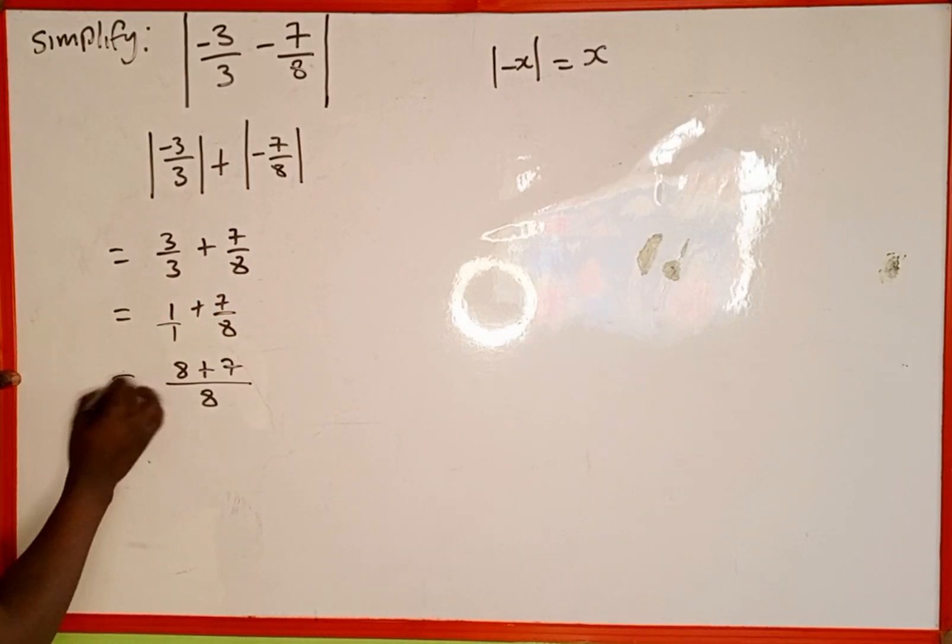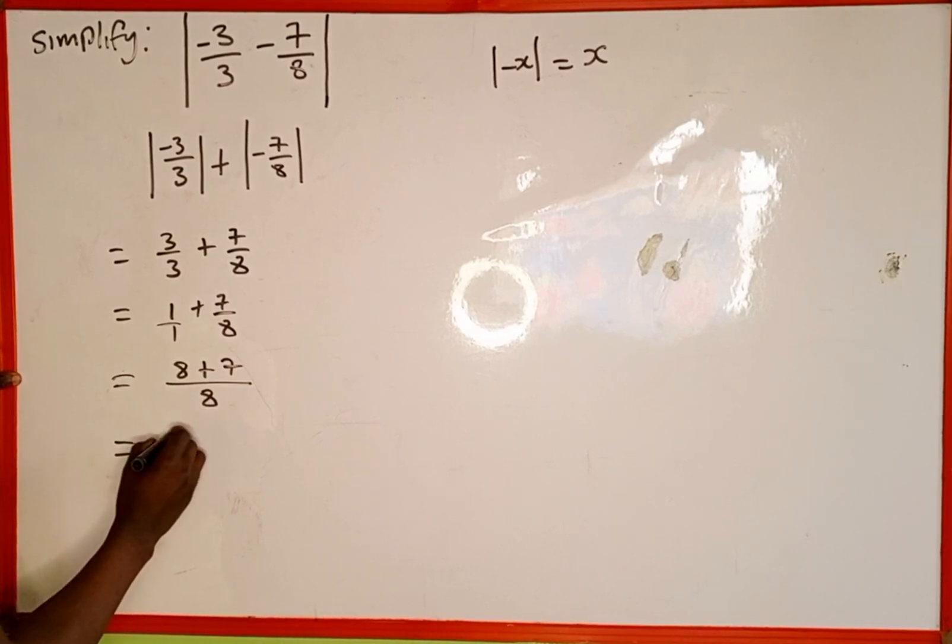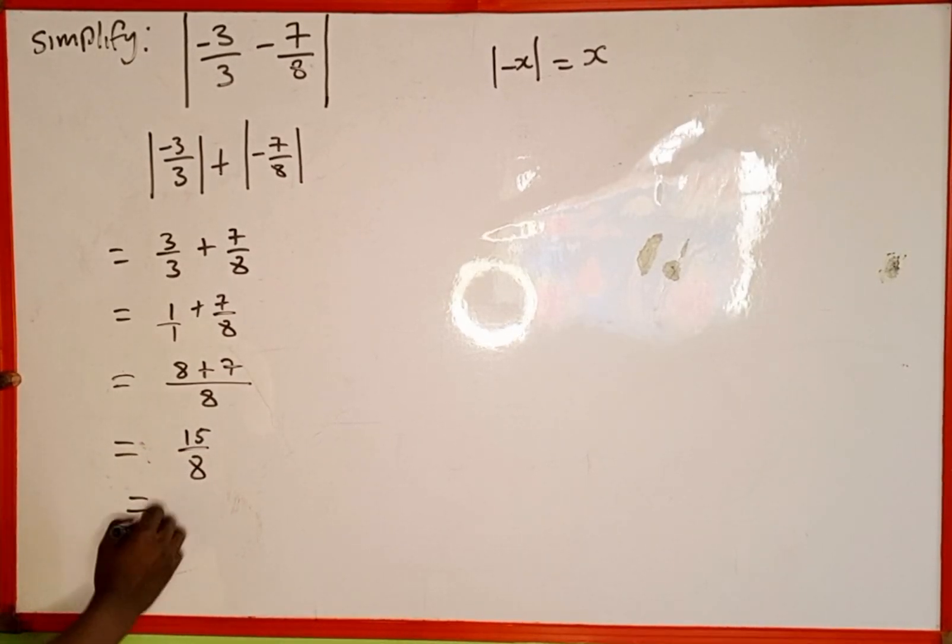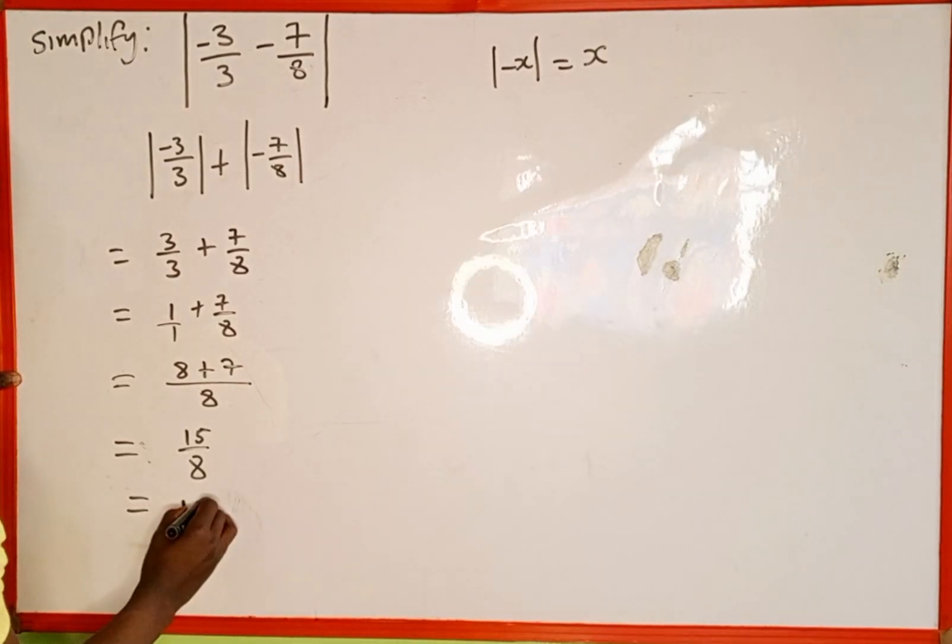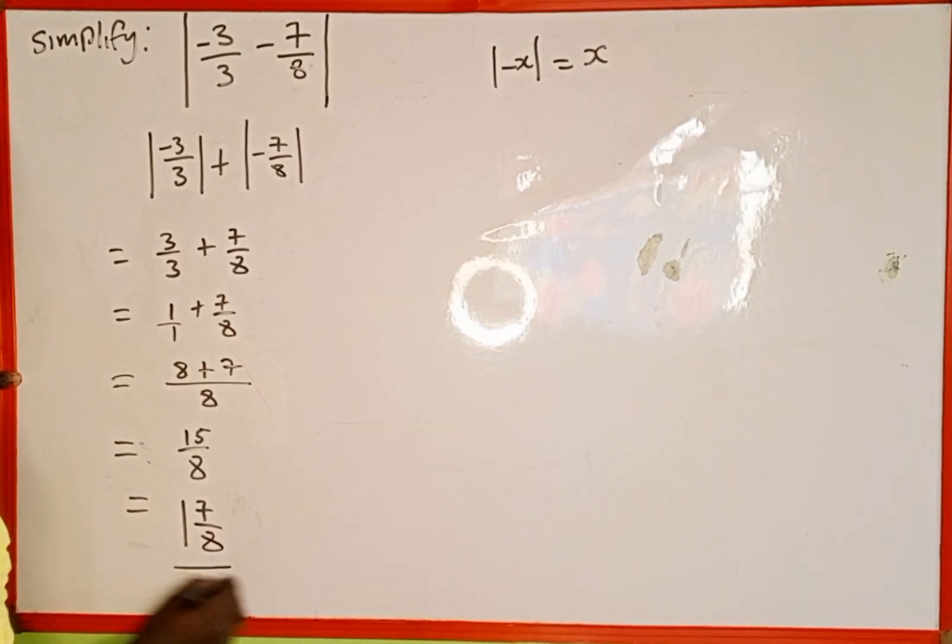This is going to be the same as 8 plus 7, which is going to give us 15 over 8. And this 15 over 8 is the same as 1 whole number 7 over 8.